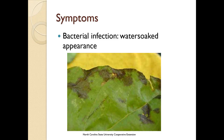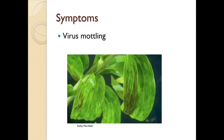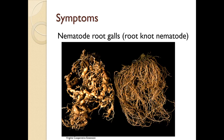Bacterial infection will appear as a water-soaked appearance. Viruses have any number of symptoms — in this case we have virus mottling on lily. This is a symptom of root knot nematode on corn: on the right-hand side we have healthy roots, on the left we have root knot nematode, which you can imagine will hinder the growth of the plant.